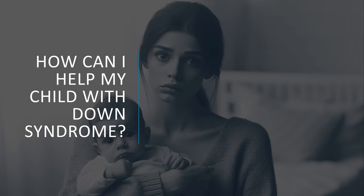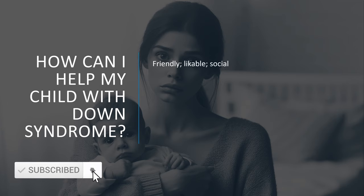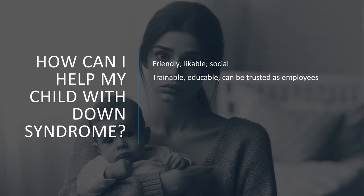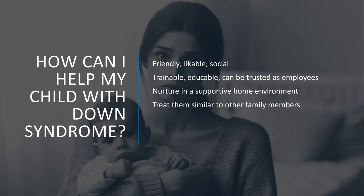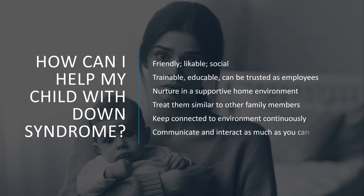If a mother asks how she can help her child with Down syndrome, tell her that children with Down syndrome are usually friendly, likable, and social — they are trainable, educable, and can be trusted as employees. Nurture them in a supportive home environment, treat them exactly the same as other family members, keep them always connected to their environment, and communicate and interact with them as much as possible.